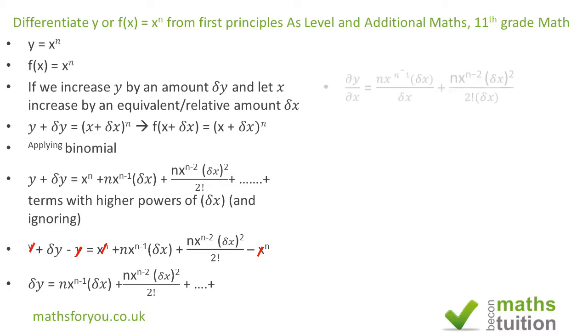If we then divide every term by δx, we have δx in the denominator and δx in the numerator for each term. For the first term, the δx will cancel out. For the second term, one of the δx in the numerator will cancel.